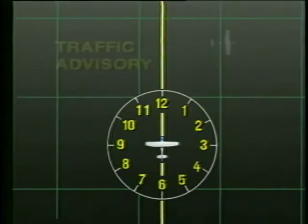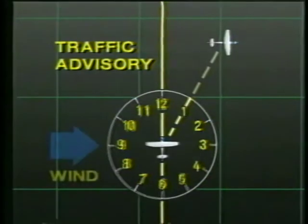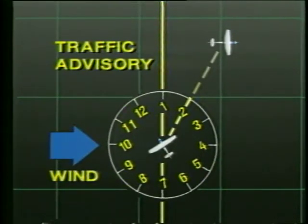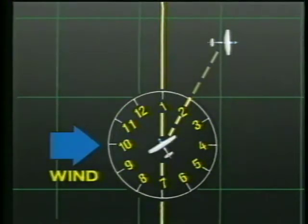For example, Cessna 740, traffic 1 o'clock, 2 miles, a Cessna 7,500 eastbound. If you are turned into the wind to maintain your ground track, the actual location of the traffic may be different than that given by the controller. In this example, the traffic is actually at your 2 o'clock position. When you are trying to locate the reported traffic, consider your ground track and encompass a wider range in your scan.